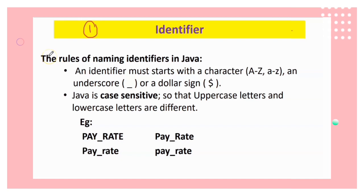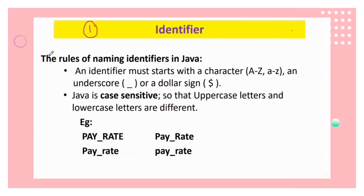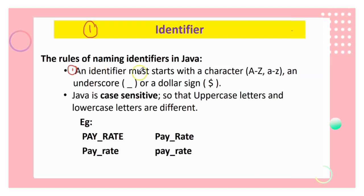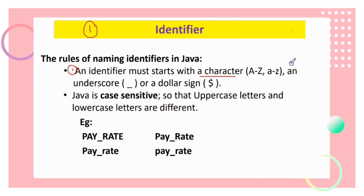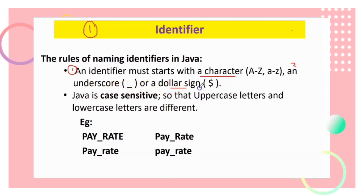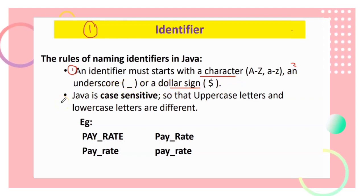Now we see the rules for naming identifiers in Java. First, remember an identifier must start with a character — either uppercase or lowercase letters. Second, you can use an underscore or a dollar sign. Java is case-sensitive, so uppercase letters and lowercase letters are treated as different.